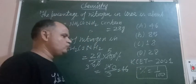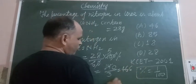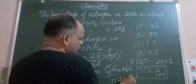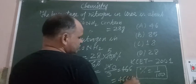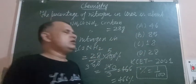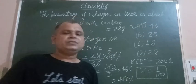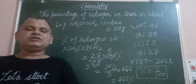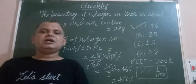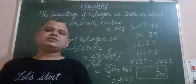So that gives us 46.67% of nitrogen in urea. The answer to this question is approximately 46%. Okay students, I hope you got it. Thanks for watching.